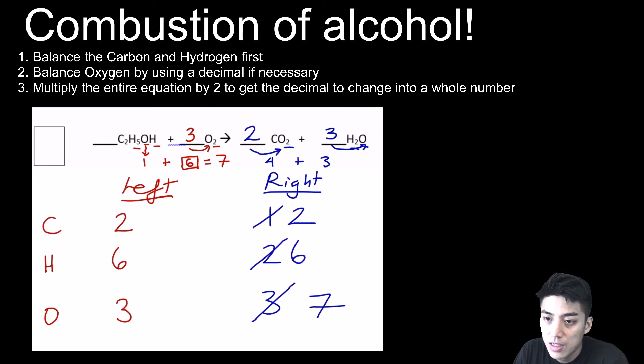I didn't have to use a decimal in front of this oxygen this time, so our coefficients are already whole numbers. You can just add them up and find the sum. This is one plus three plus two plus three, giving us a sum of nine for this combustion problem.